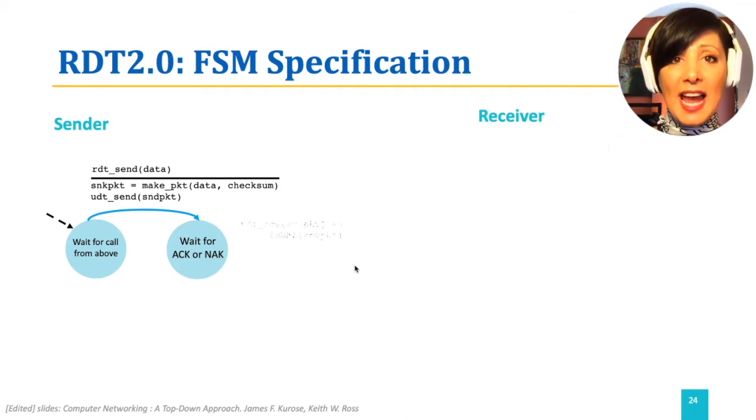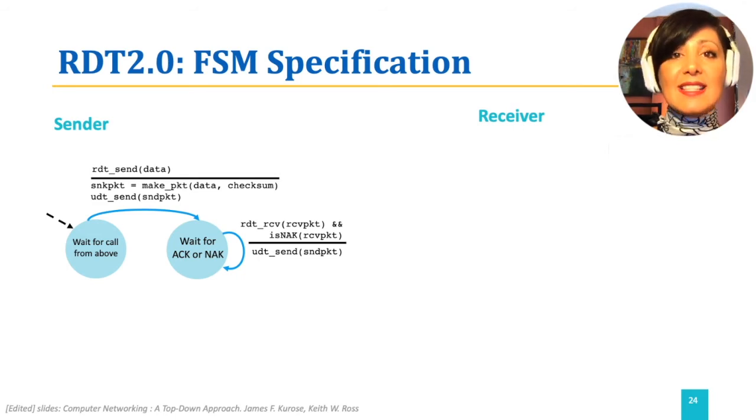If a NAK, Negative Acknowledgement, is received, the sender sends the packet again and still stays in the wait state for ACK. This is repeated until there is a positive Acknowledgement.